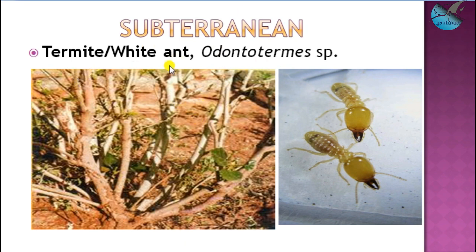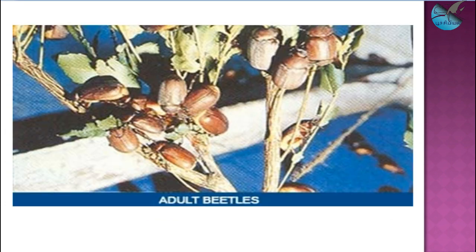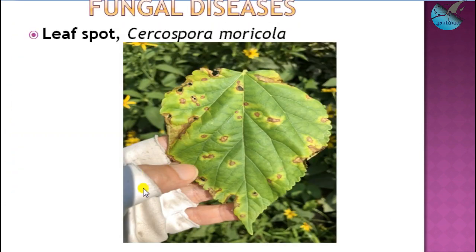Next are the subterranean pests, feeding below ground level. The first is the termite or white ant, Odontotermes species — they form nests around the plant and the worker caste feeds on it. The next subterranean pest is the white grub, Leucopholis species. For subterranean pests, like stem borers, they are mostly found in areas where maintenance of the orchard is poor.